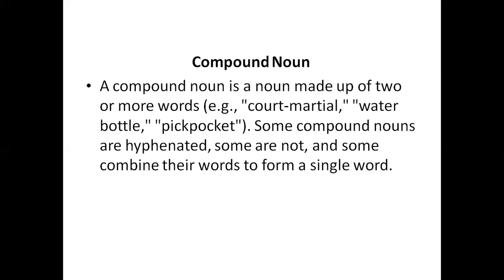A compound noun is also formed by joining two nouns. When there is a hyphen between two nouns, that symbol is called a hyphen. For example, 'court' is a noun and 'marshal' is also a noun, but there is a hyphen between them. In 'water bottle', both water and bottle are nouns but there is no hyphen between them.